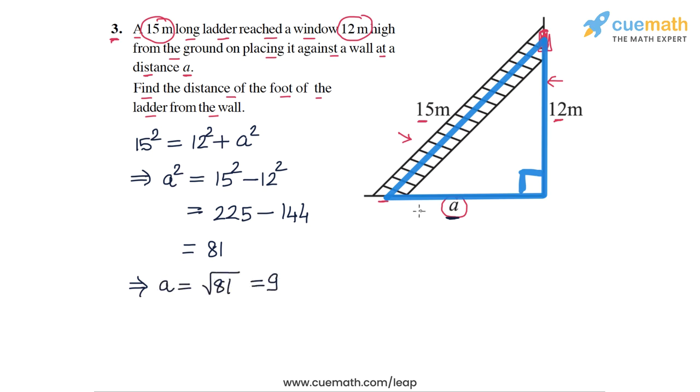So the value of a, the length a, is 9 meters and this means that the foot of the ladder, this point foot of the ladder, is at a distance of 9 meters from the wall. So the answer for this question is 9 meters and this completes question number 3.